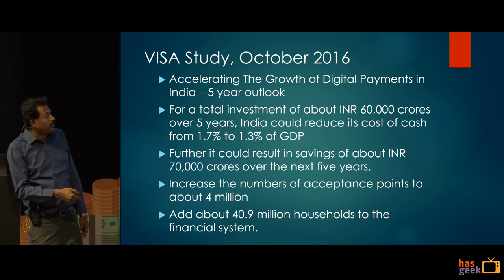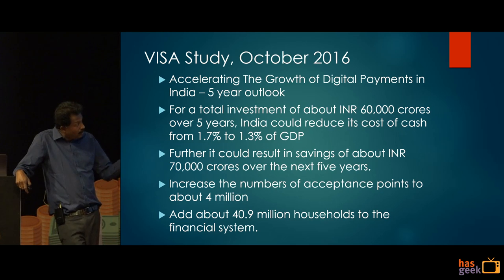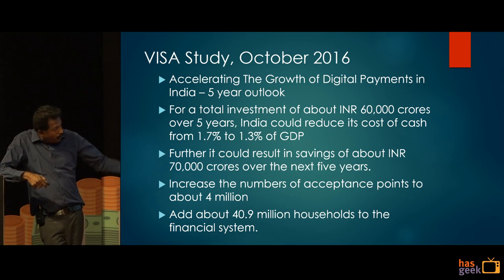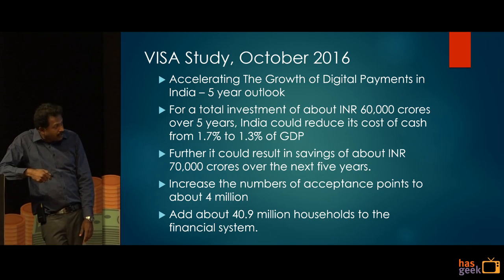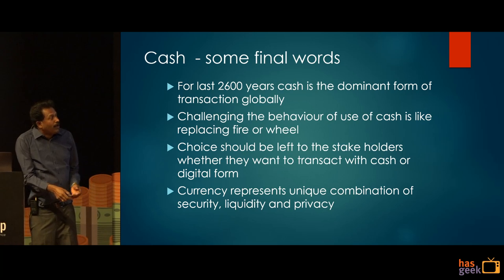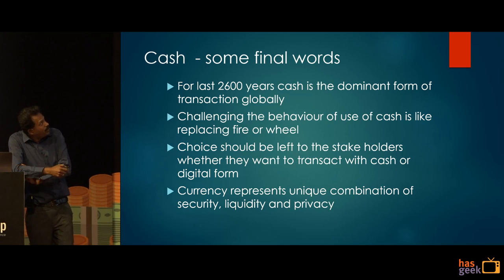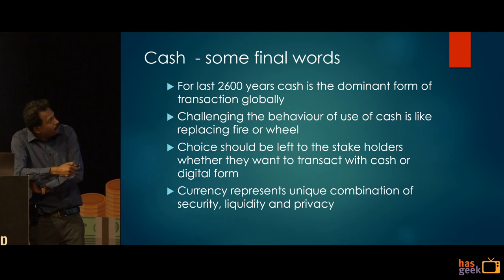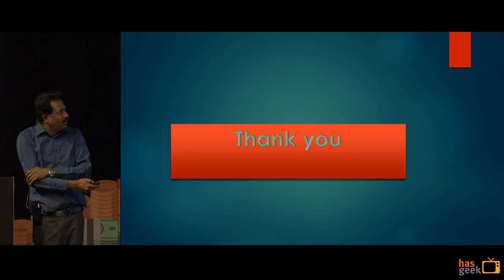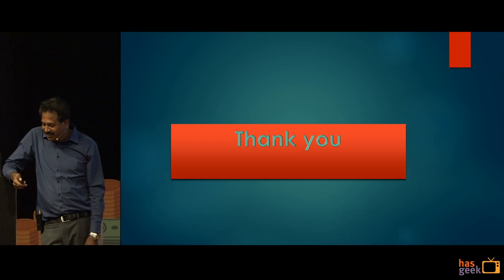The plan requires increasing POS acceptance points from 15 lakh to 40 lakh, and adding 40.9 million households into the financial system. Final words: cash has been the dominant form of currency for the last 2,600 years. Replacing it is like removing the wheel and trying to fly — a leap frog — and the systems may not be in place. The choice should be left to the stakeholders whether they want to transact in cash or digital form.